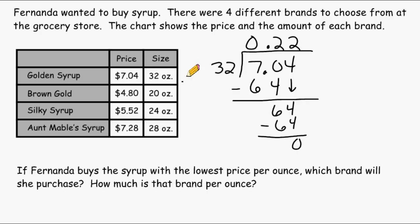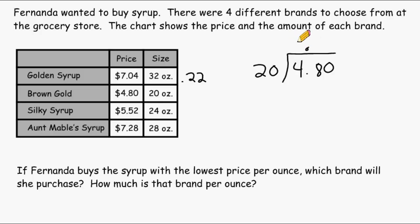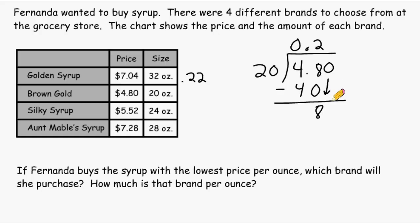Let's figure out how much it is for Brown Gold. Brown Gold is four dollars and 80 cents altogether, and that is for a 20-ounce bottle. We take the decimal and write it at the top, and write a zero here. Now let's divide 20 into 48 — that can be divided twice, two groups of 20 is 40. 48 minus 40 is 8. We drop the zero down, giving us 80, and 20 goes into 80 exactly four times. So the price of Brown Gold is 24 cents per ounce.